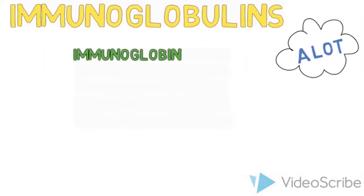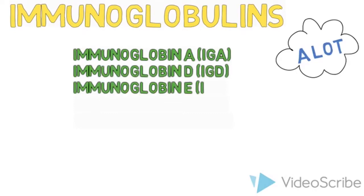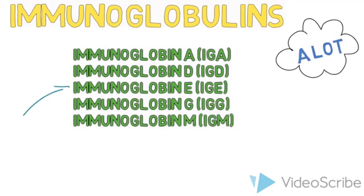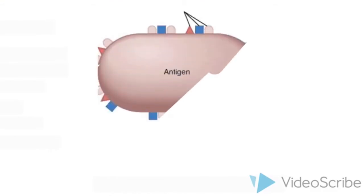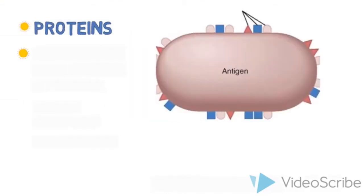Although there are many immunoglobulins, the most associated one with allergic reaction is known as IgE. Substances that stimulate the production of antibodies are called antigens. Antigens are usually proteins.